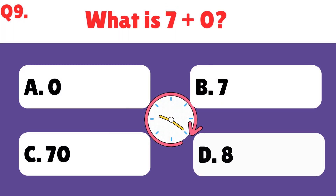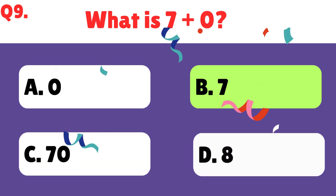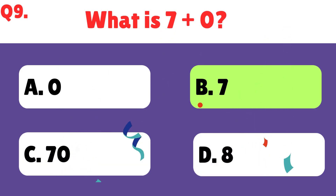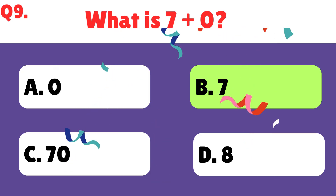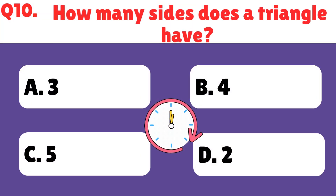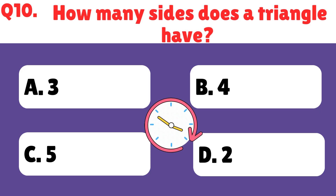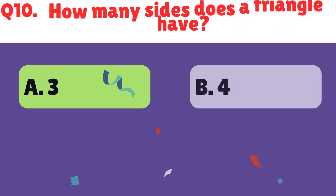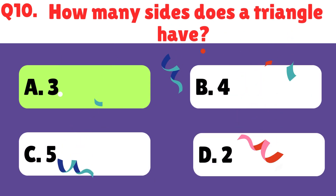What is 7 plus 0? 7 plus 0 is 7. How many sides does a triangle have? The right answer is 3.